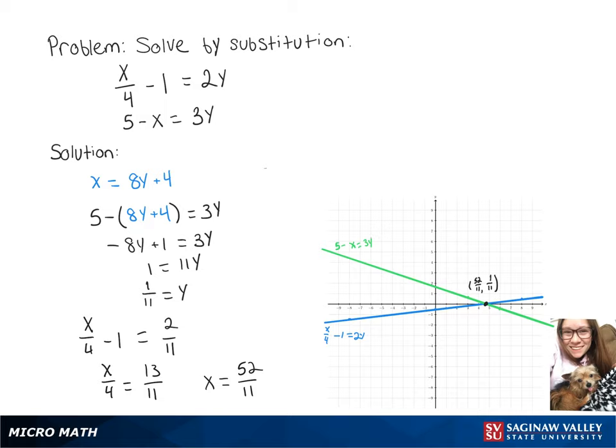So our solution to this system is 52 over 11, 1 over 11, which as you can see on our graph is where the lines intersect.